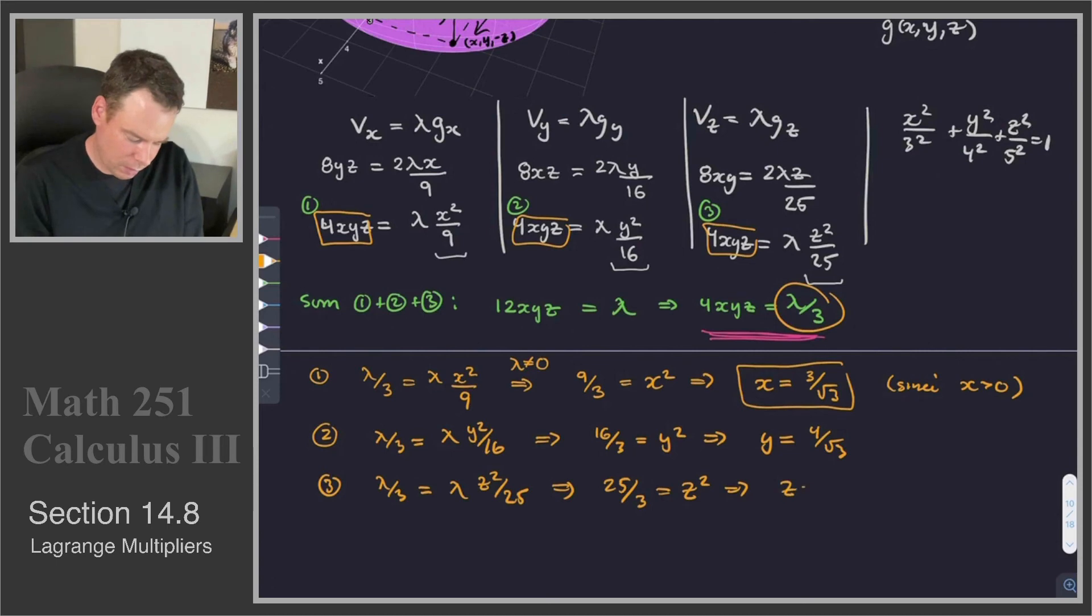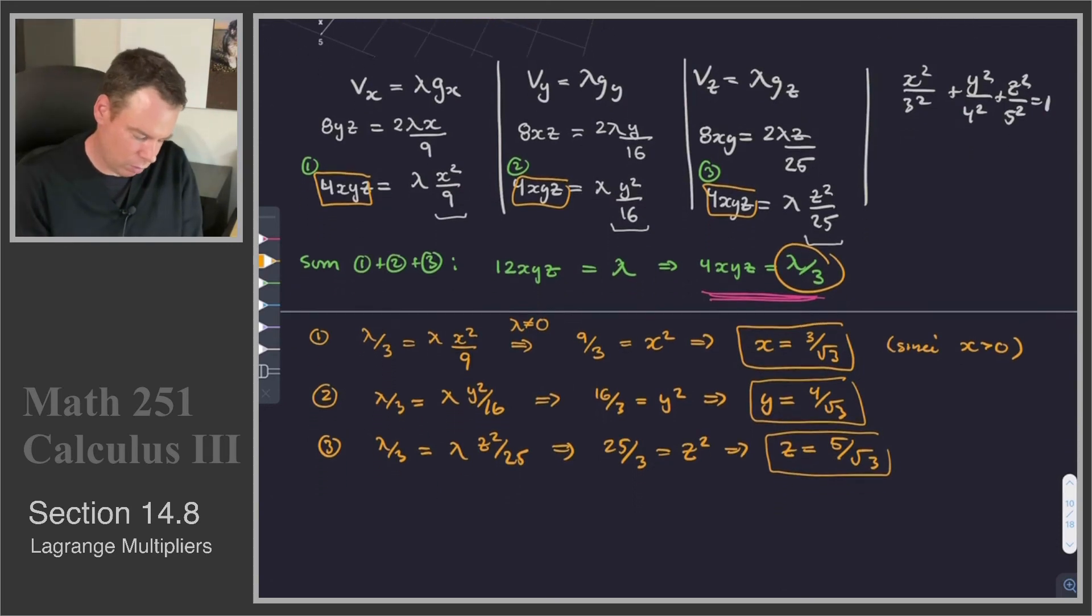And this is 25/3 = z², or z = 5/√3. So I left that first one without cancelling the 3 from the 9/3, because now I get this nice pattern happening that the x coordinate is 3/√3, the y coordinate is 4/√3, the z coordinate is 5/√3.